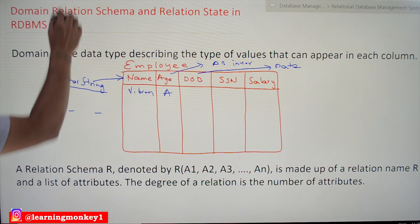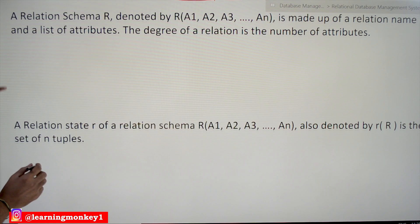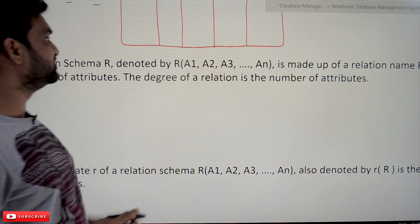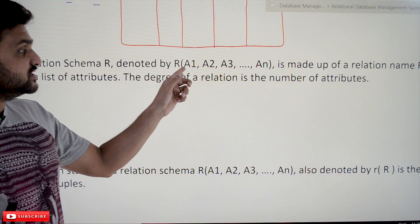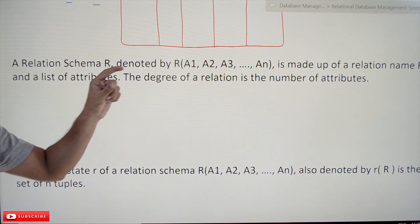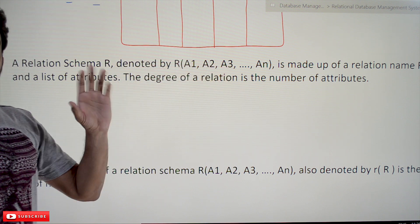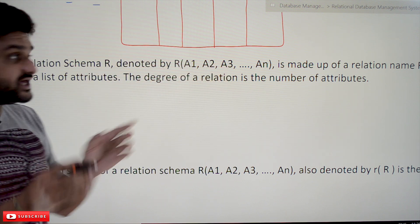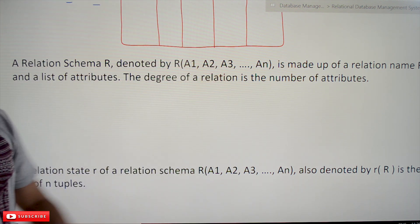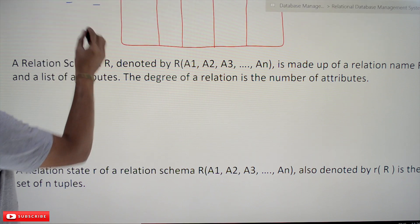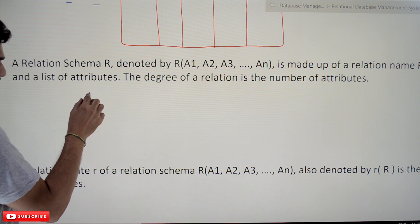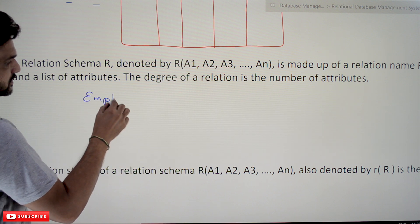The next concept is relation schema. Relation schema R is denoted as R(A1, A2, A3, ..., An). It is made up of a relation name R and the list of attributes. For example, taking the above example, the relation is 'Employee' and we list its attributes.